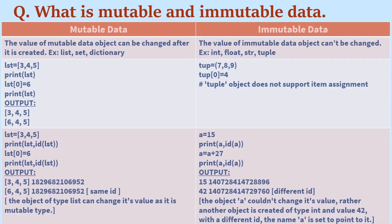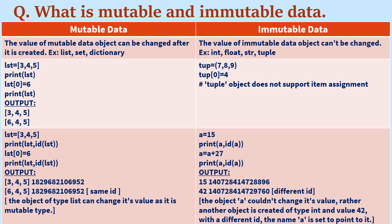The first question is: what is mutable and immutable data? Mutable data means the value of the data object can be changed after it is created. For example, list, set, and dictionary are all mutable types of data. Whereas in immutable type of data, the value of the data object cannot be changed. For example, integer, float, string, and tuple are all immutable types.